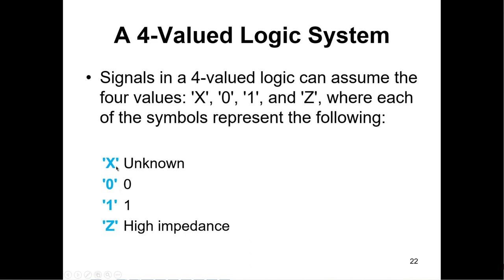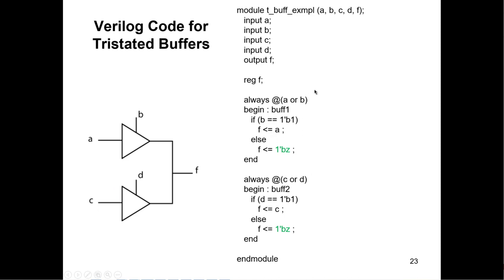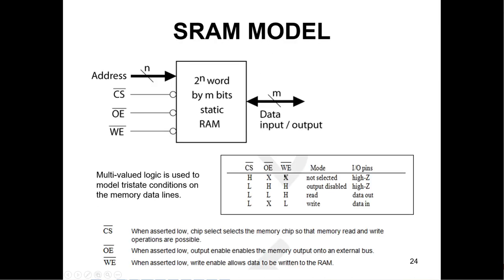Four-value logic — simple. It's just unknown (X), disconnected or high impedance (Z), zero, and one. Tristate buffers: that's where we use the Z constant. If B equals one, you output A; if B is zero, you output disconnected (Z). Parameters: basically just a way to specify constants, but you can change parameters every time you instantiate a module — so a module can be instantiated each time with different parameters.